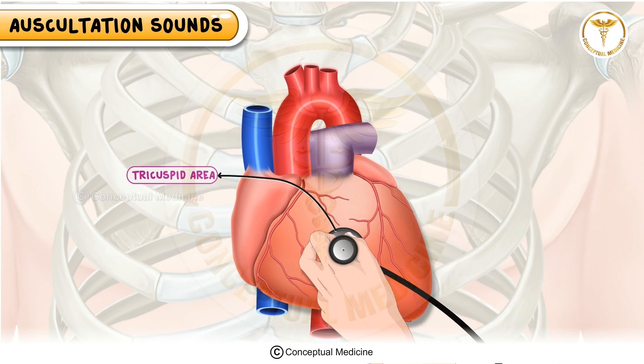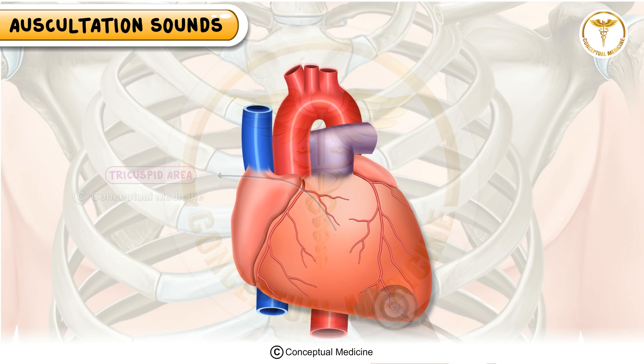The tricuspid area is situated in the fourth left parasternal intercostal space, making it the optimal site for listening to tricuspid valve murmurs.